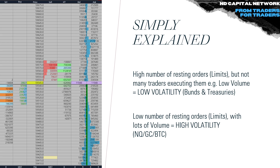Limit orders are the heavier hand in the market because they're used by large players who cannot afford market orders due to slippage. So they use various advanced orders such as icebergs to hide their intention and not get front-run. If you're putting a limit order in the order book, you're making liquidity. Because limits are the heavier hand, they are the ones that stop markets from advancing or declining, as aggressive market participants — market orders — often hit the limit wall and get absorbed. Market orders are executed at market; you press buy or sell and get filled at the first available price.